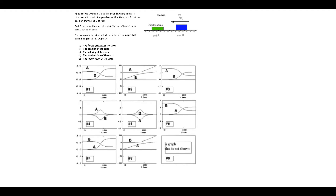For part A, there won't be any force while the carts are not in contact with each other, so the graph should have a period before and after where there's zero force, and then a sudden spike showing force acting during the collision. Looking through, both of graphs fit that model. The force exerted by cart A will be the same as the force experienced by cart B — cart B is travelling along and then reduces its velocity during the collision, so it has experienced a negative force, which means cart A has exerted a negative force. So that's graph number five.